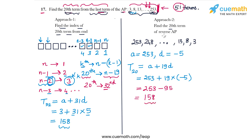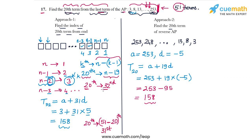Personally, I prefer the second approach because it is quite clean and there is less chance of making a mistake. In the first approach, many students make the mistake of taking the index as N−K instead of N−(K−1). For example, they write the 20th term from the end as the (51−20) = 31st term, rather than the correct 32nd term.